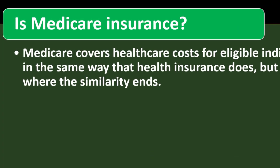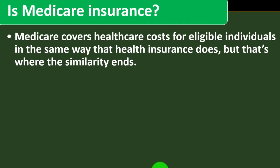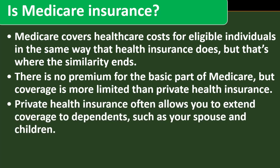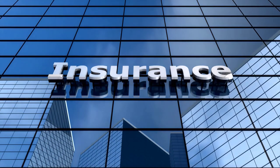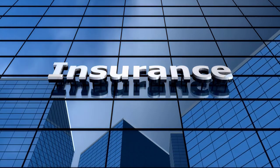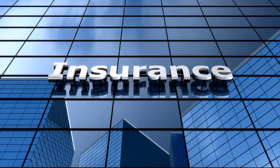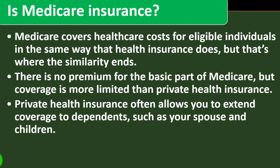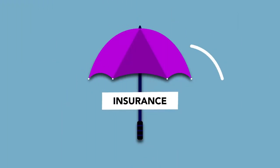Is Medicare insurance? Medicare covers health care costs for eligible individuals in the same way health insurance does, but that's where the similarities end. There is no premium for the basic part of Medicare, but coverage is more limited than private health insurance. Private health insurance often allows you to extend coverage to dependents such as your spouse and children — but if you're transitioning from regular insurance to Medicare, you can't take your family along on that journey.